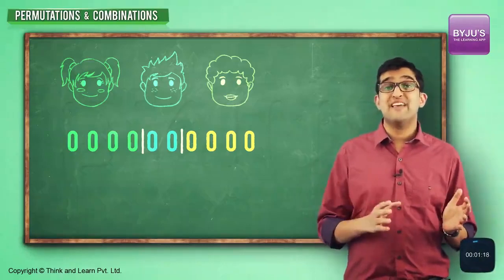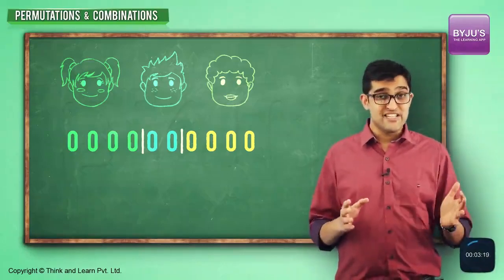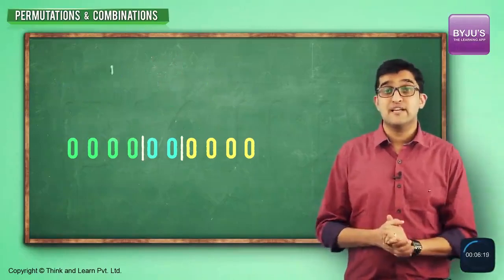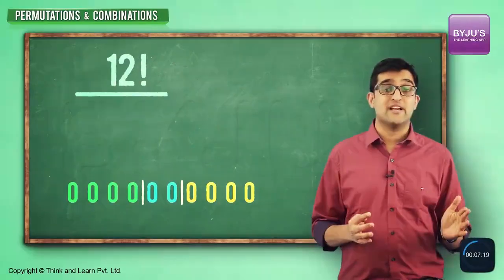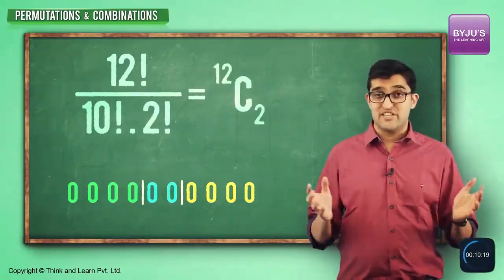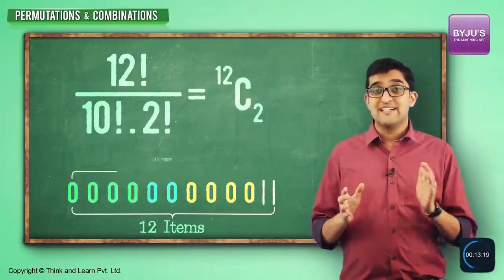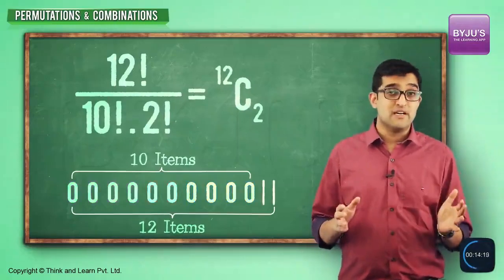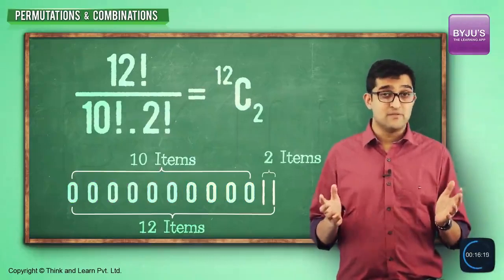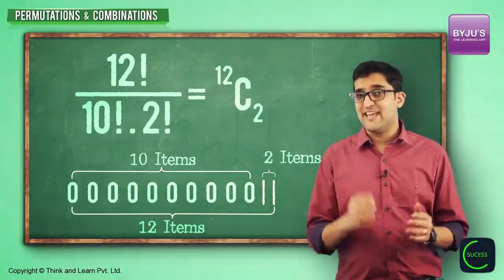The question now is: how many ways can I arrange 10 zeros and 2 ones? The answer is 12 factorial divided by 10 factorial into 2 factorial, or 12C2. Because there are 12 items total, 10 of which are similar and 2 of which are similar. We have solved this question in under 30 seconds!